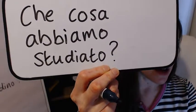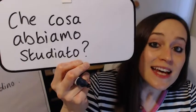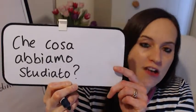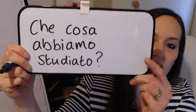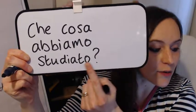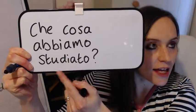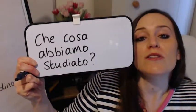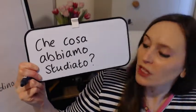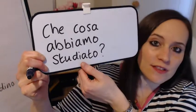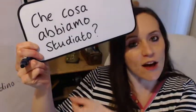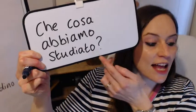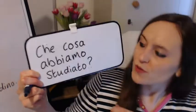It's an A-R-E verb — studiare. Some verbs might have -are at the end but they've got an I in there, like the verb mangiare. Che cosa abbiamo mangiato? Don't be surprised if the stem of the verb also includes an I. You'll just keep the I in there and add -ato as usual.